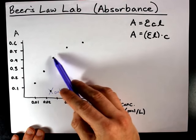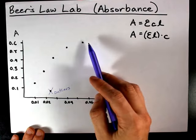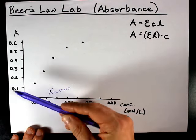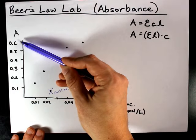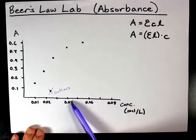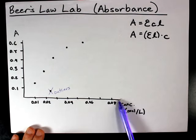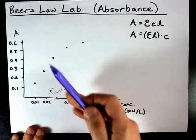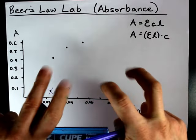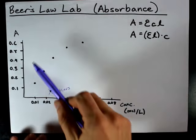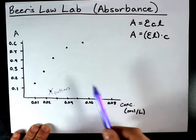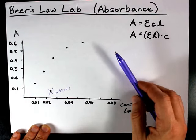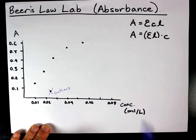Secondly, if your data is flattening out towards the end or high concentrations, it's probably because the absorbance is getting too high, and increases in concentration won't result in the same amount of increase in absorbance. I don't want to say the solution's saturated, but there's hardly any light left for the spectrophotometer to detect once you get to high concentrations of highly absorbent chemicals.